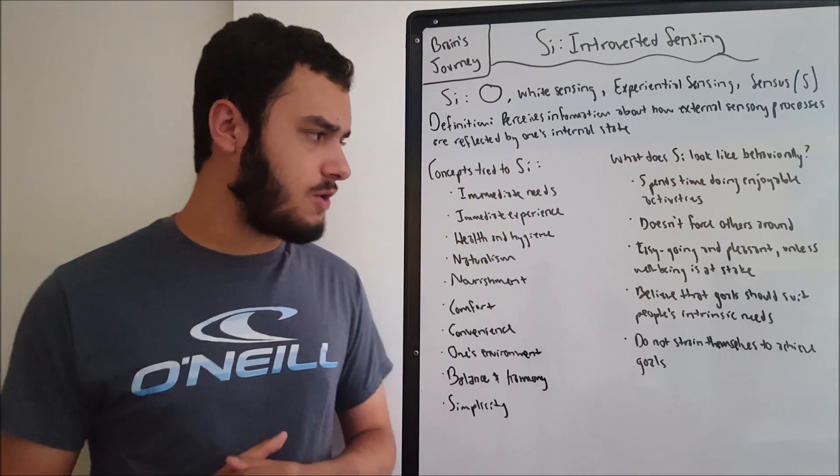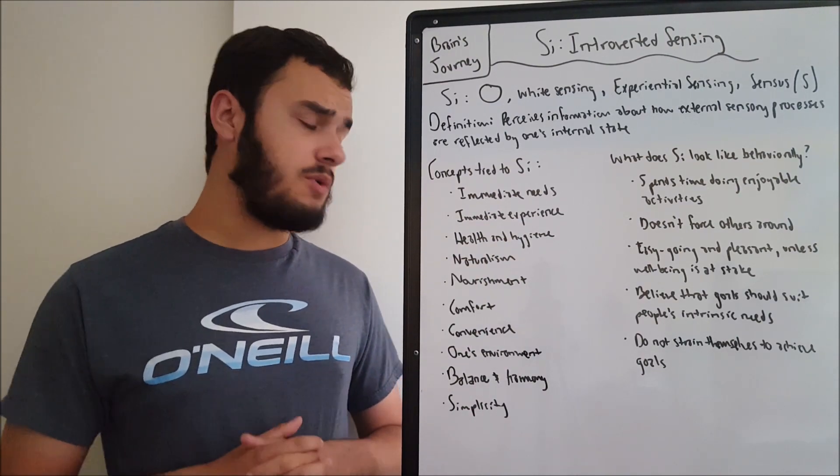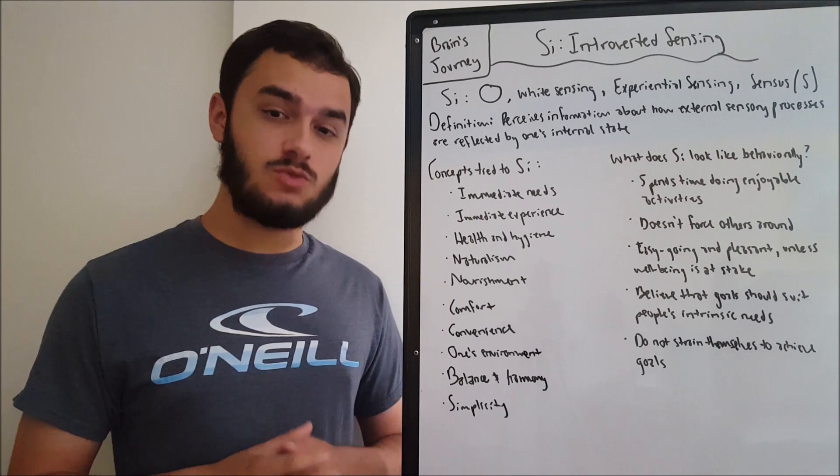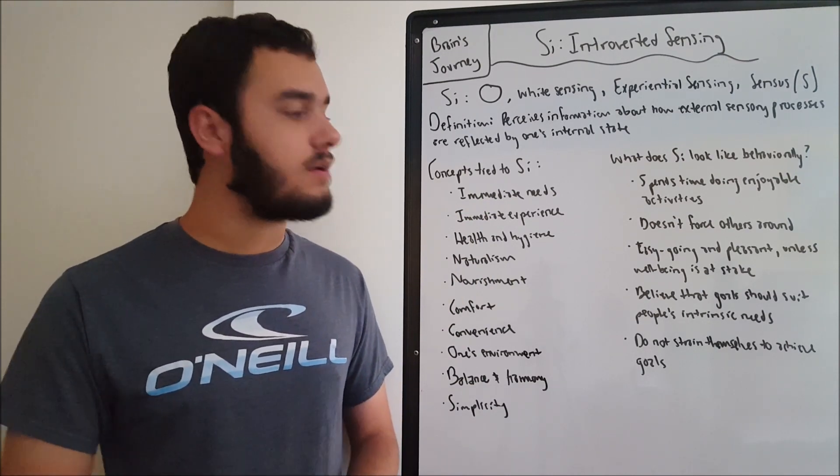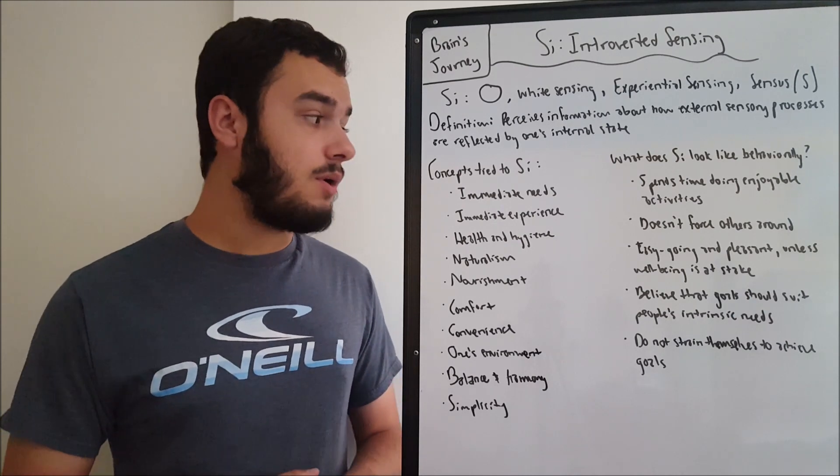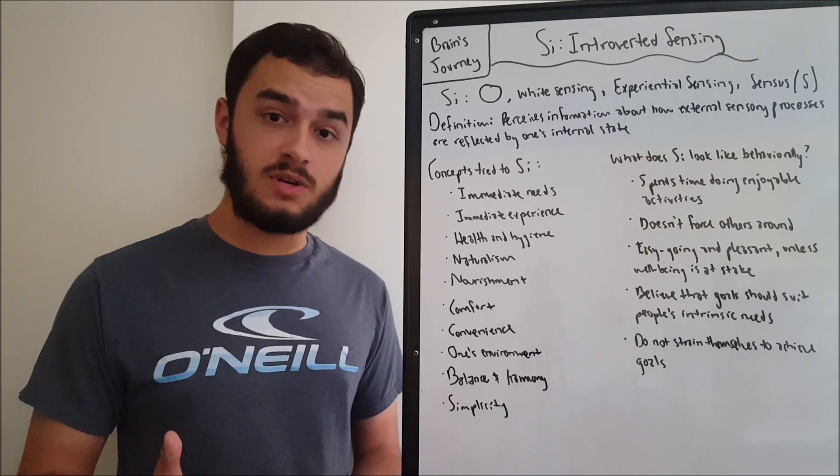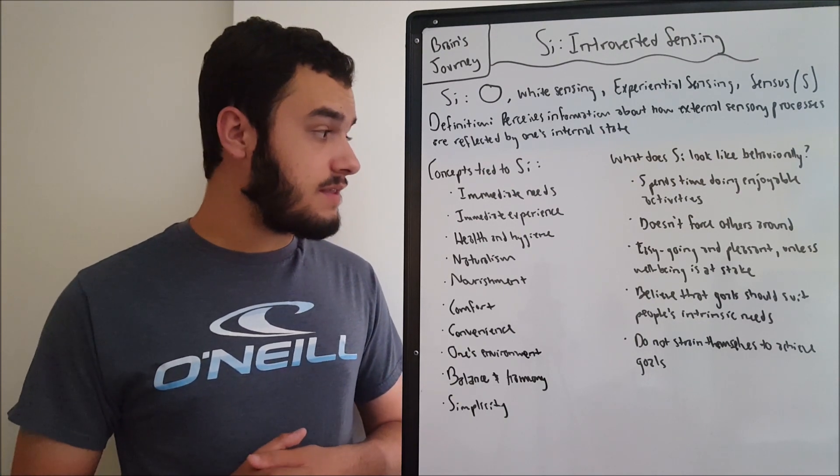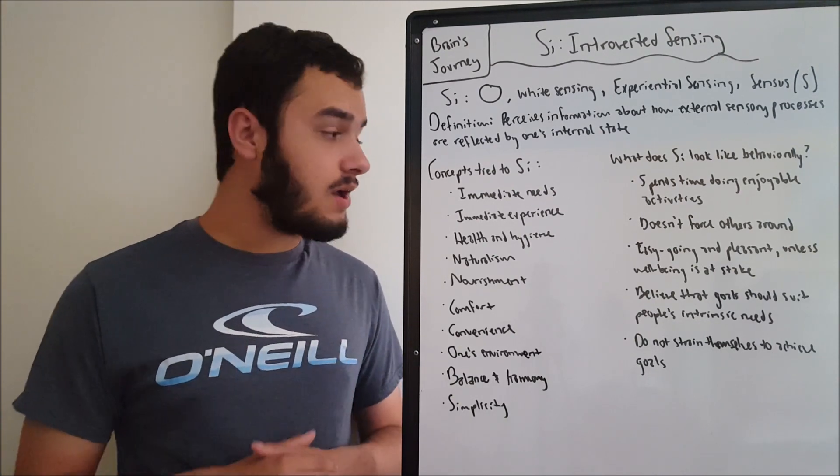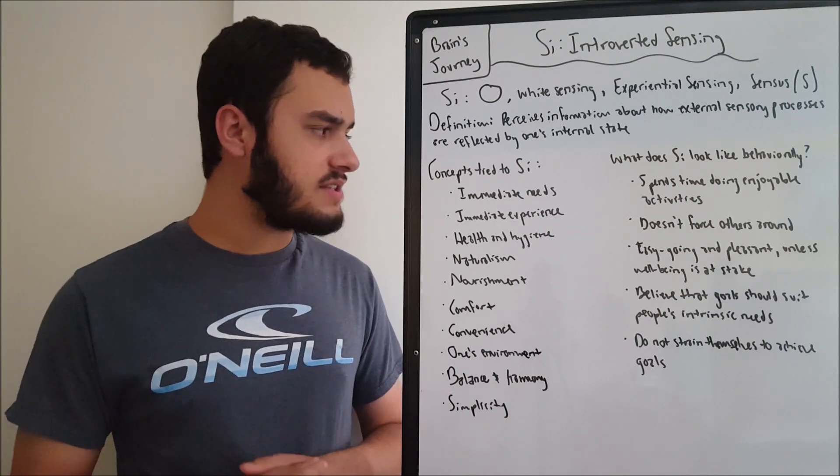So to illustrate this in detail, we have some concepts here that I've listed out that I'm going to go over briefly. The first thing that we want to look at with SI is immediate needs. What does that mean? Well, let's say survival needs. Maybe food, water, thirst, shelter, all these things that are required to craft a beneficial experience for somebody. Immediate survival things, things that somebody needs to function.